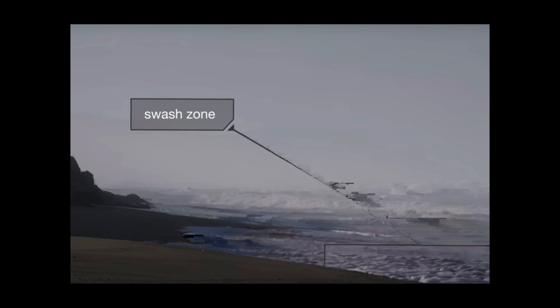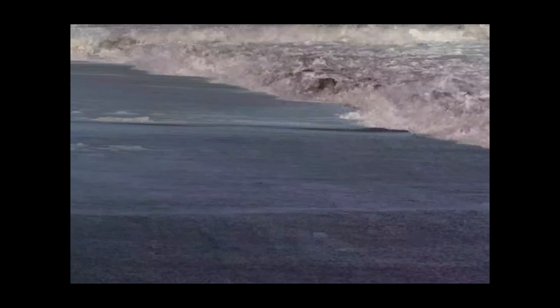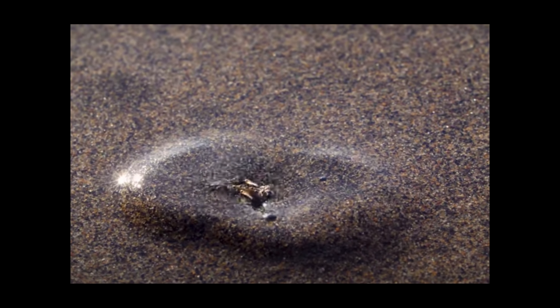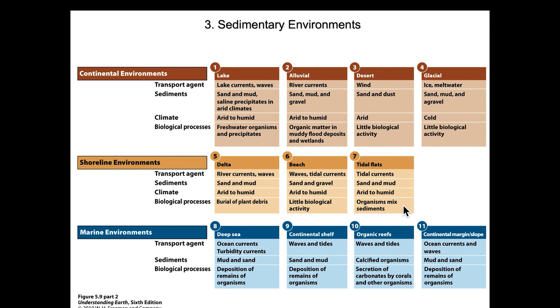Beach deposits are moved by waves and tidal currents, consisting predominantly of sand and gravel, and can occur in arid to humid climates. There are burrowing crabs and worms, but they do little real sedimentological work to influence the ultimate deposit. In tidal flats, materials are subject to movement by tidal currents — sand and mud predominantly — and organisms are significant agents of bioturbation, constantly mixing the sediment.